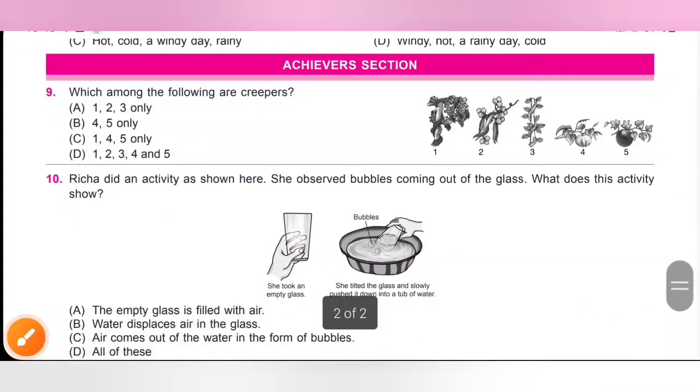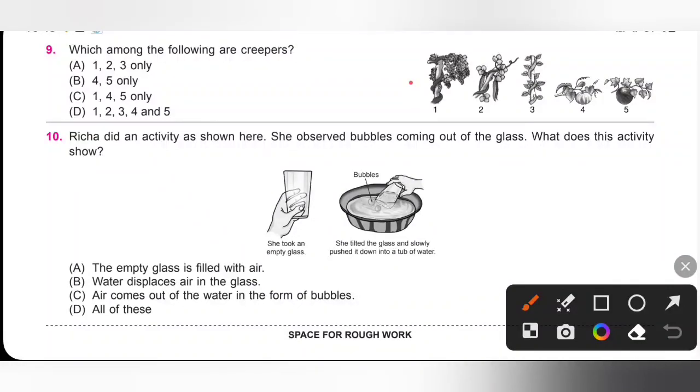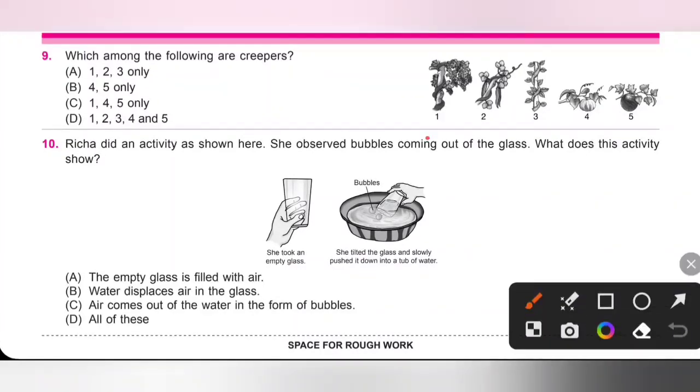Next, last section is Achievers section. Ninth one, which among the following are creepers? So we know creepers is a kind of plant which grows along the ground. It bears large fruit. So one, two, and three are climbers. Four and five are creepers. So four and five only, option B is the correct answer.